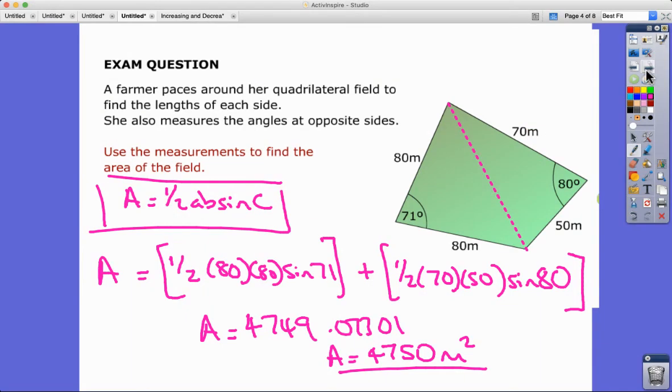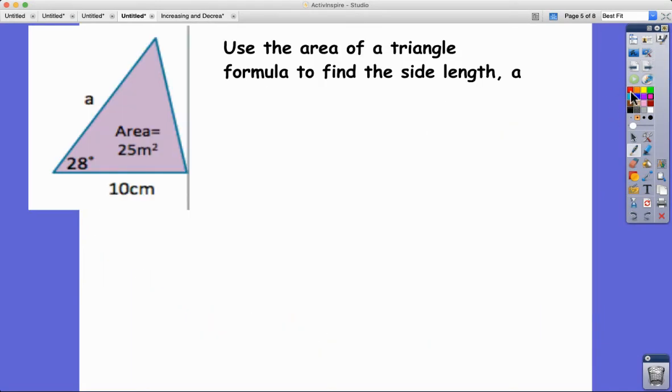Next one, the last one. You might get a back-to-front question. In this question I'm actually given the area and it's our job to find the side length a. Here the area again is half AB sine C. Now I know the area in this one, so I'm going to start to substitute some of the values I've been given into the formula. So I've got 25 equals half times 10 times a, the thing I'm trying to find, sine 28.